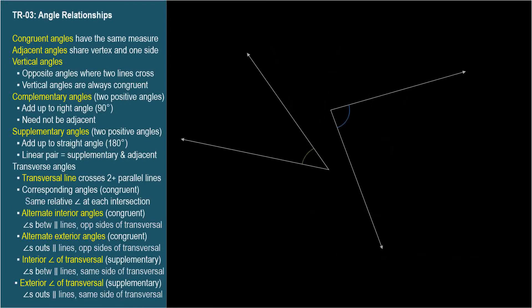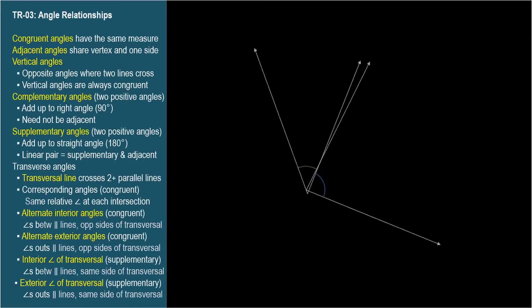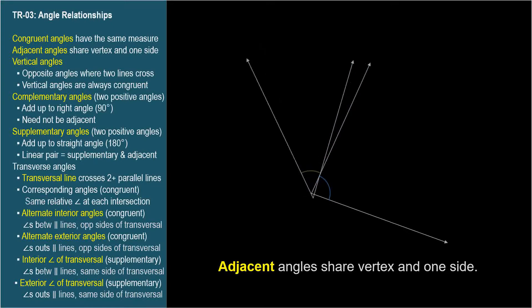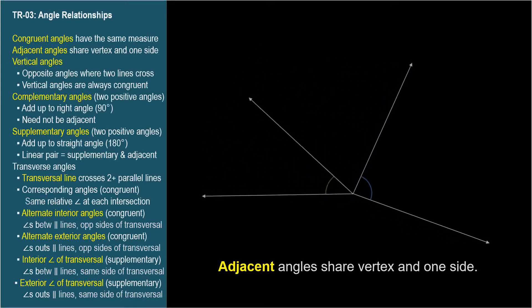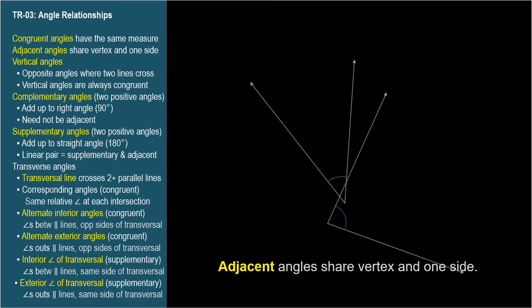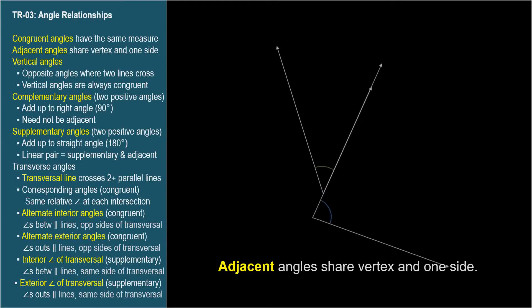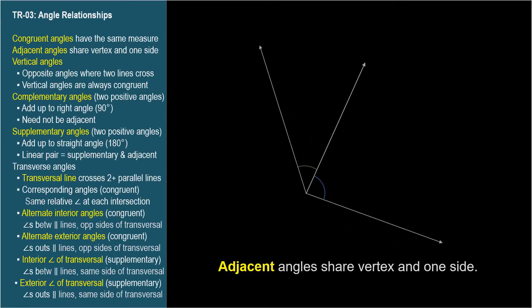Two angles that butt up against each other, sharing a vertex and a side, are called adjacent angles. These are not adjacent angles — they share a vertex but no side. And these are not adjacent angles — they share a side but have different vertex points. Adjacent angles share their vertex and one side.